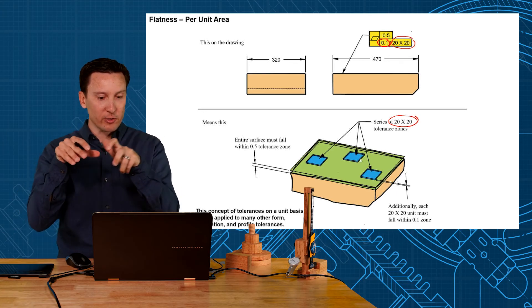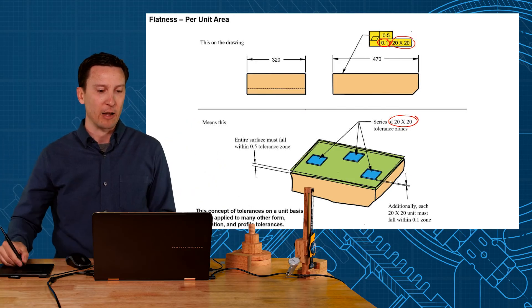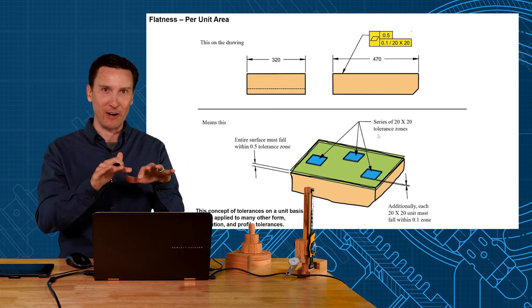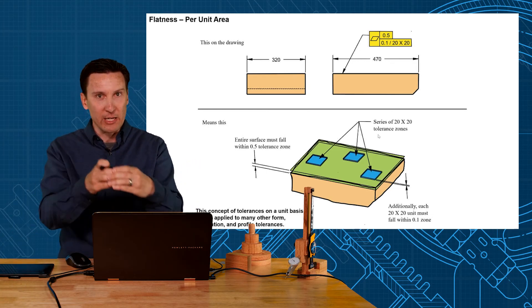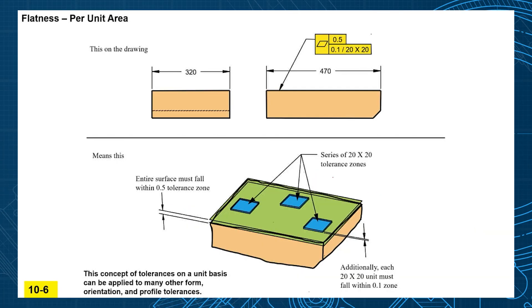Now this does create a series of tolerance zones and they are an infinite number of overlapping tolerance zones, and that's making sure that each portion of it is flat smaller than the overall. So you could have a gradual change of flatness. Let's say across the entire thing you could have a flatness problem within the half a millimeter, but then you have a smaller set of zones that are floating inside that are overlapping each other and making sure the rate of change is no more than the 0.1.